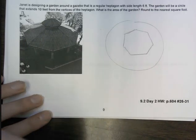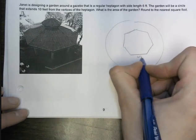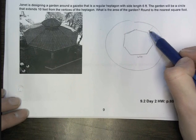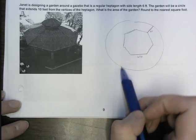I know it doesn't look that regular, but we'll go with it. So we know that each side of my heptagon is six feet, and that the garden is extending 10 feet from the vertices, and that should be the same all the way around. So from each vertex, it is extended 10 feet.